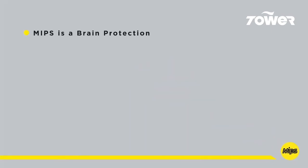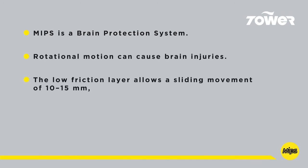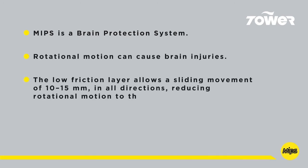MIPS is a brain protection system. Rotational motion can cause brain injuries. The low friction layer allows a sliding movement of 10 to 15 millimeters in all directions, reducing rotational motion to the brain during impact. MIPS adds protection.